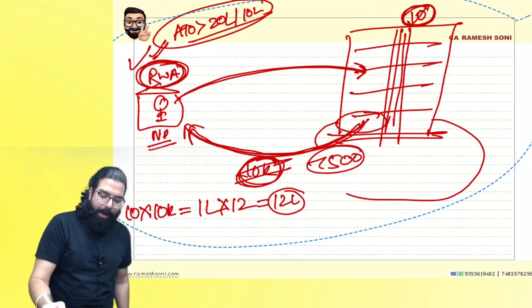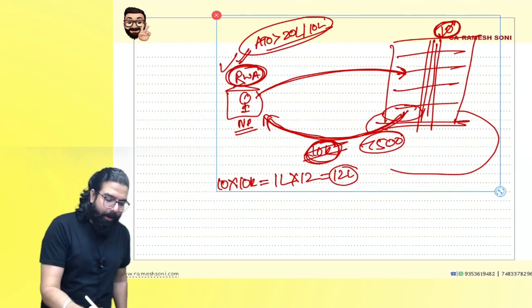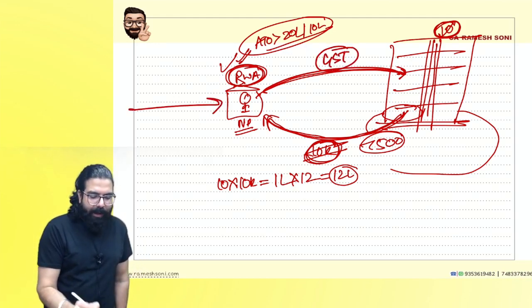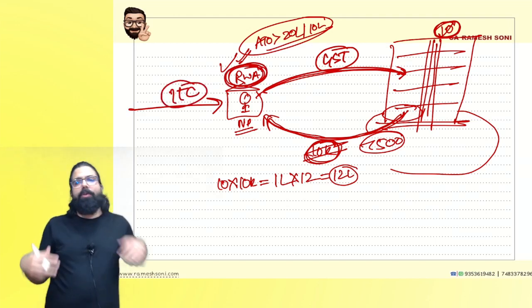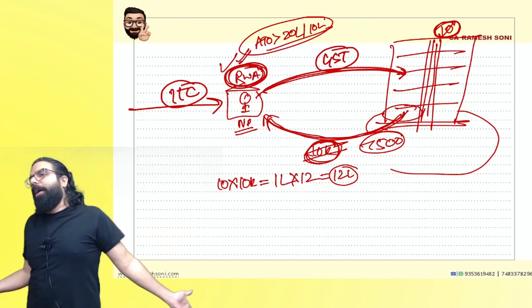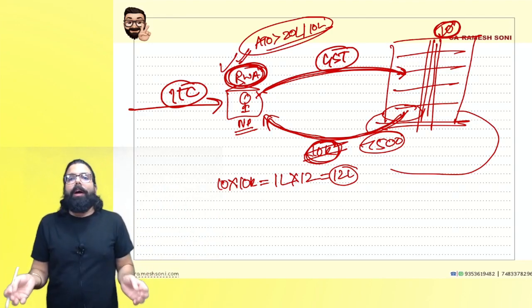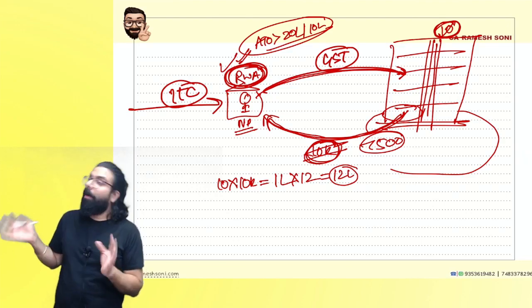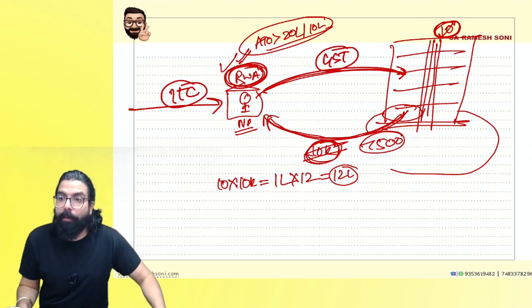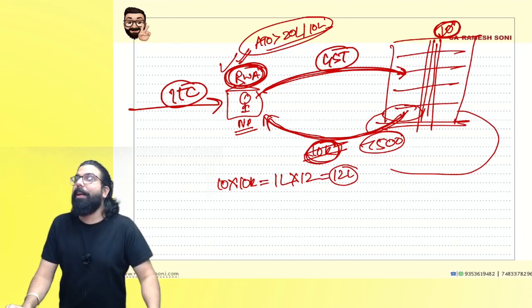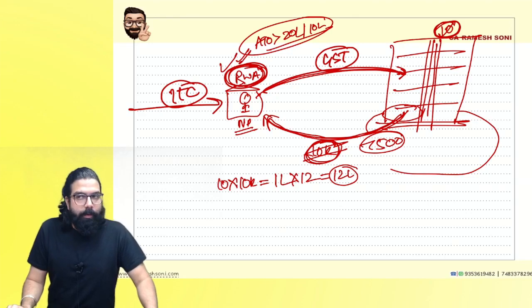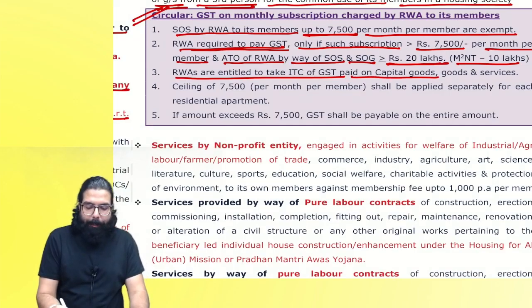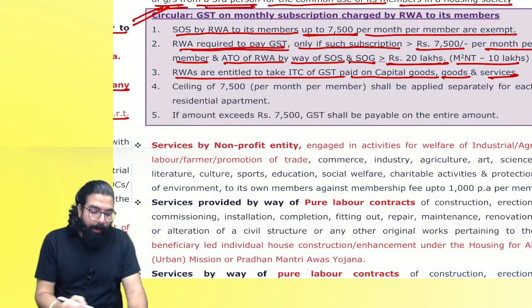If RWA charges more than ₹7500 and charges GST to its members, then it can take input tax credit. Whatever inputs RWA buys — generators, taps, tube lights — they can take all input tax credit, provided they charge GST output. RWA is entitled to take ITC on capital goods, goods and services, provided output tax is there.